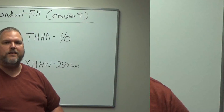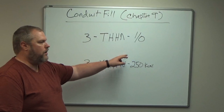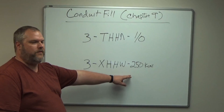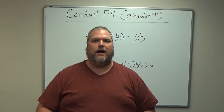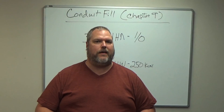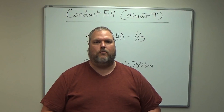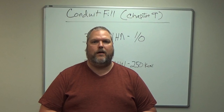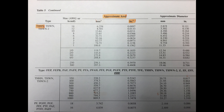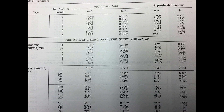Let's do an example. We're going to use three THHN 1 AWG and three XHHW 250 kcmil. We're using two different types of insulation, so we have to make sure we get the correct approximate area from table 5 in chapter 9. We go into the code and check: THHN 1 AWG is 0.1855 square inches, and XHHW 250 kcmil is 0.3904 square inches.